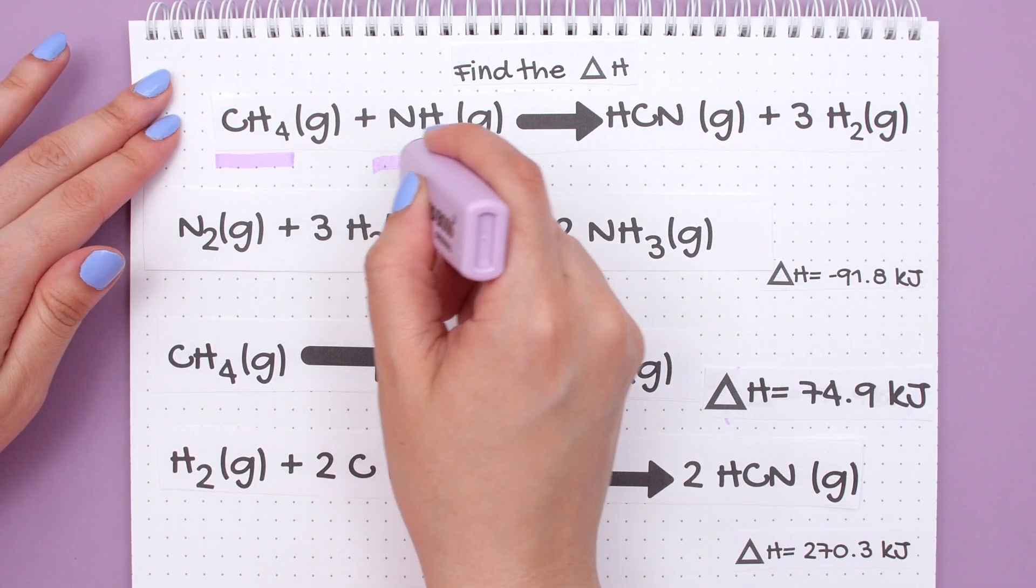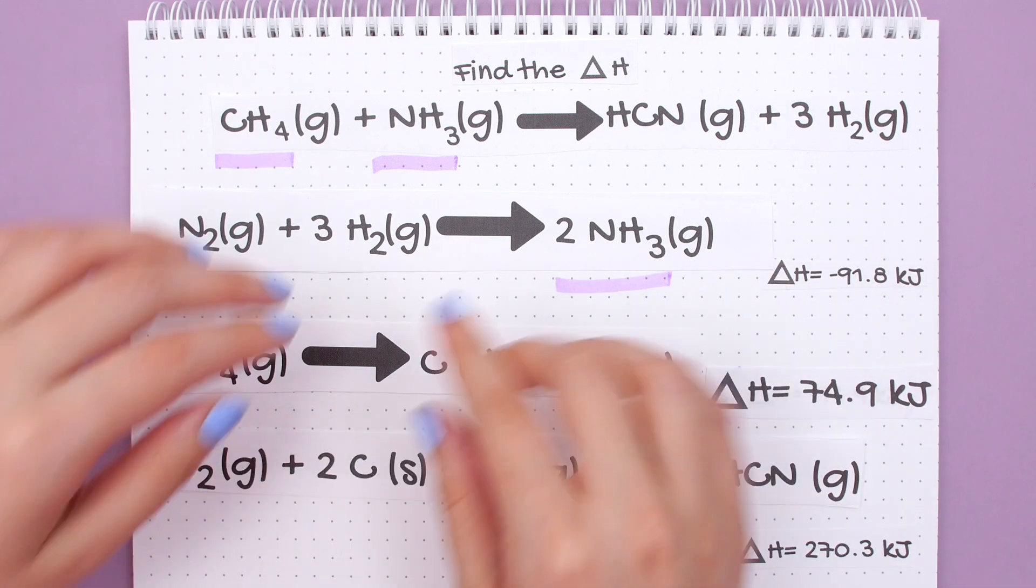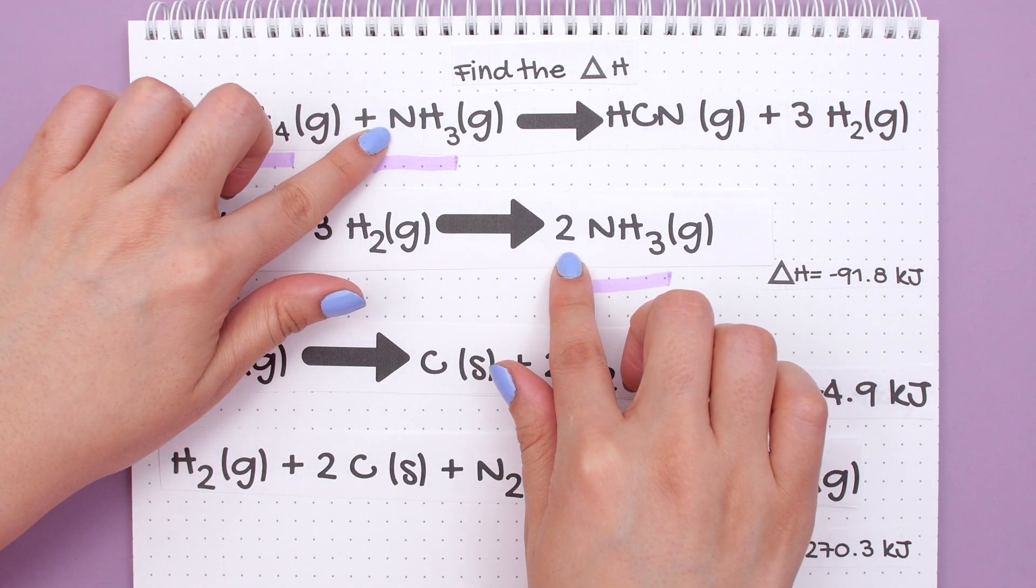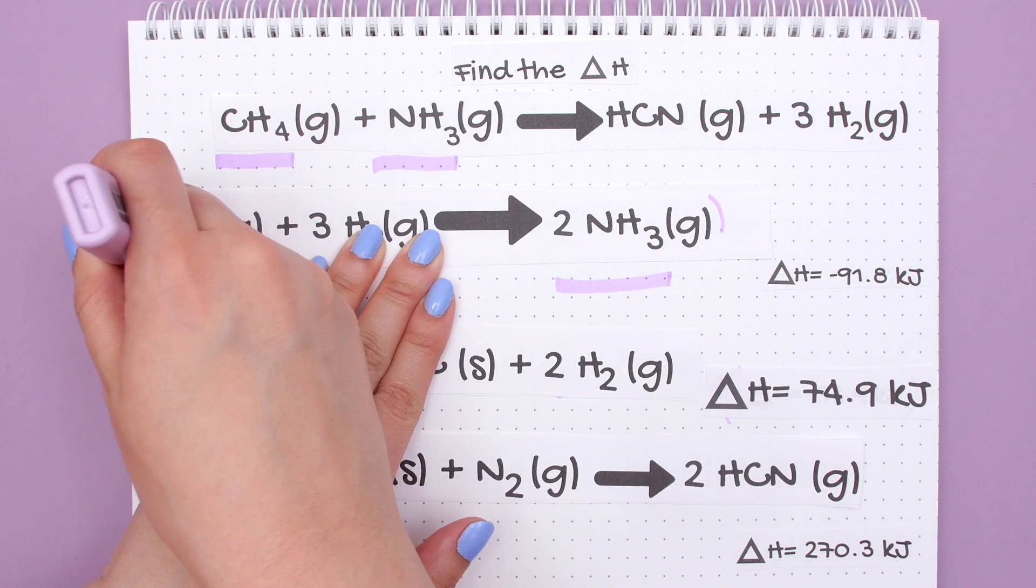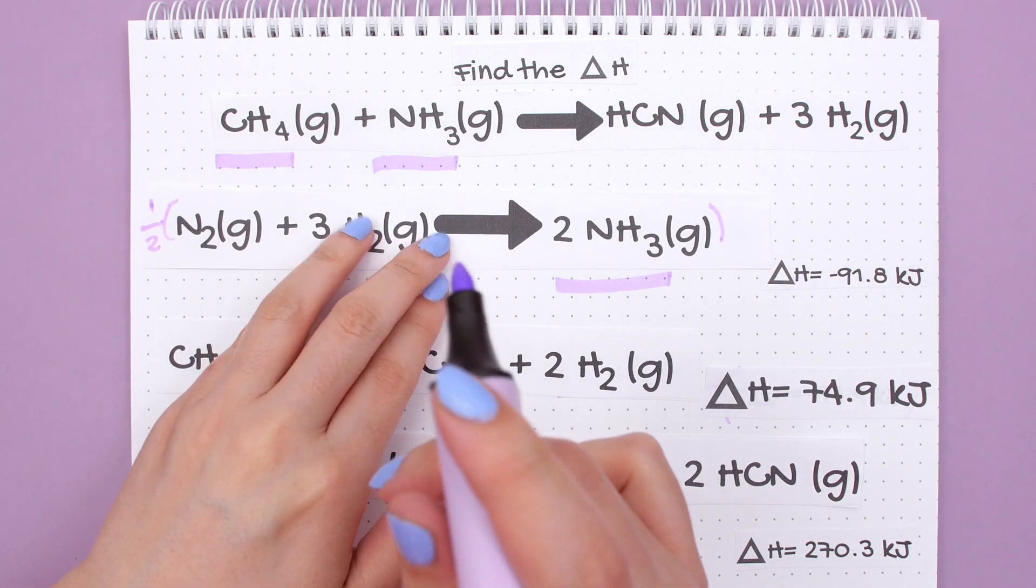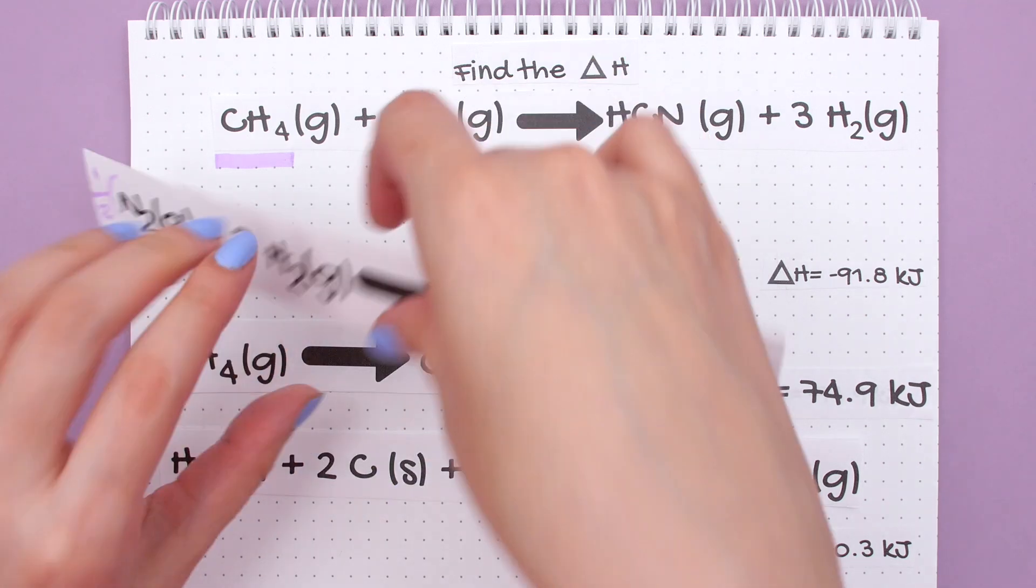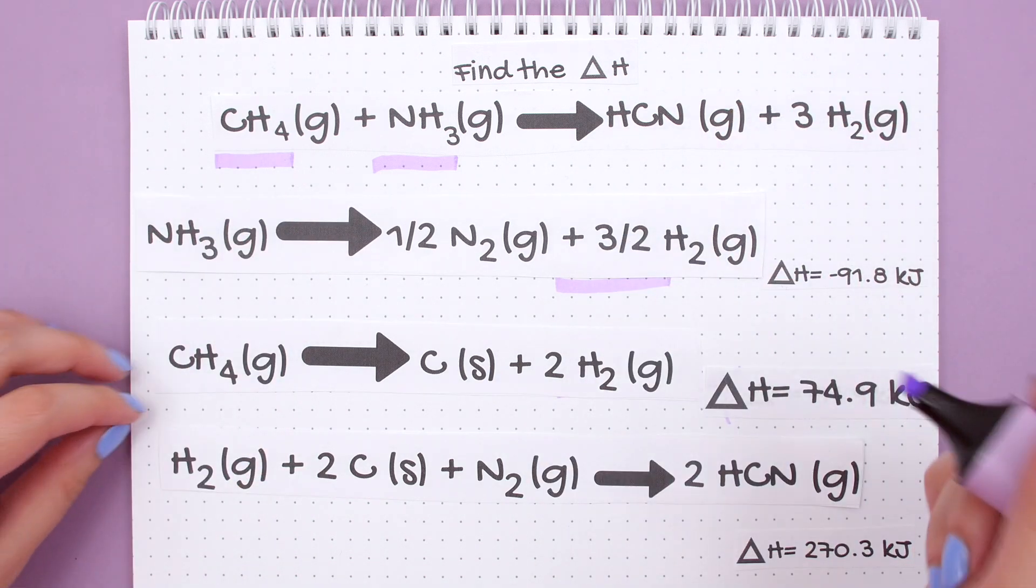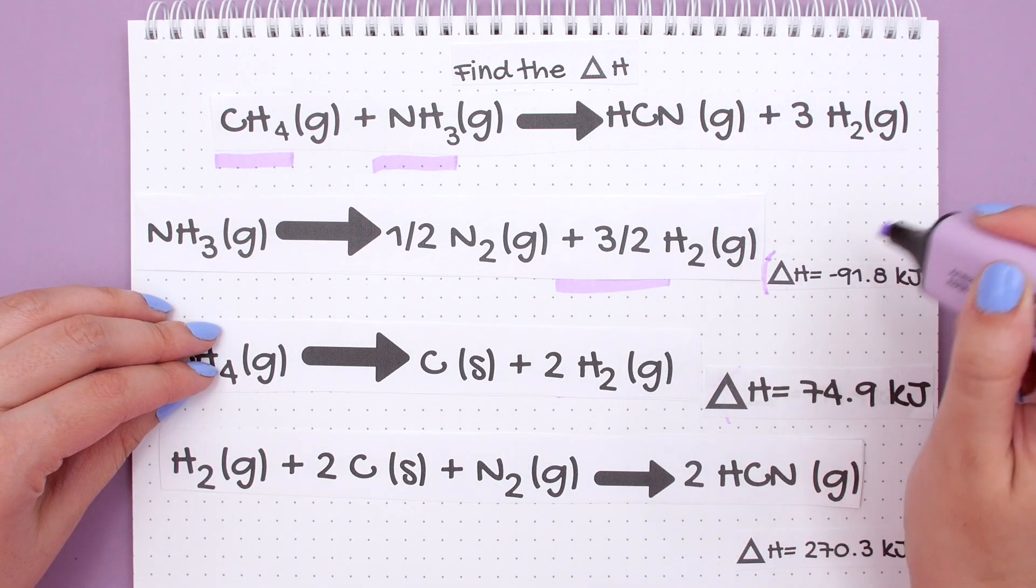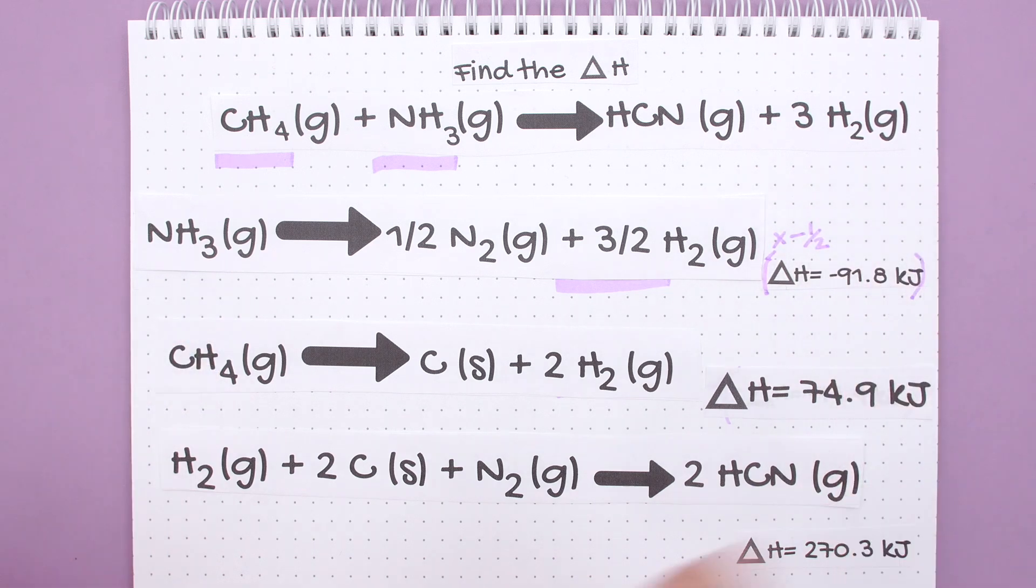On to the second reactant NH3. Now NH3 is on the wrong side and there are too many NH3s - we just want one and we actually have two, so we will multiply the entire reaction by one-half, which is the same thing as dividing everything by two, and we will flip the reaction. So since we multiplied by one-half and flipped the reaction, we must multiply by negative one-half to our enthalpy change and we'll get this new value.